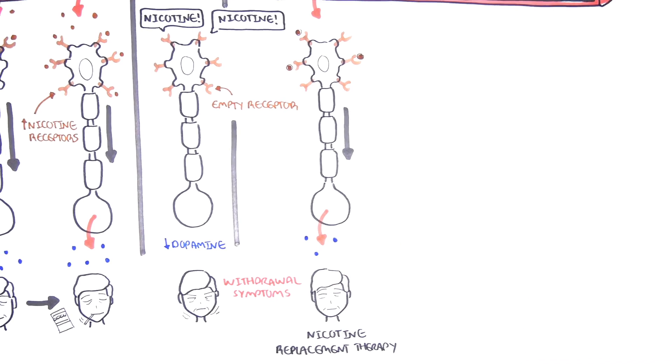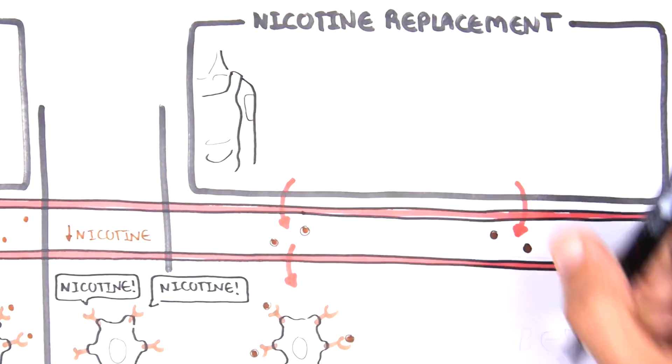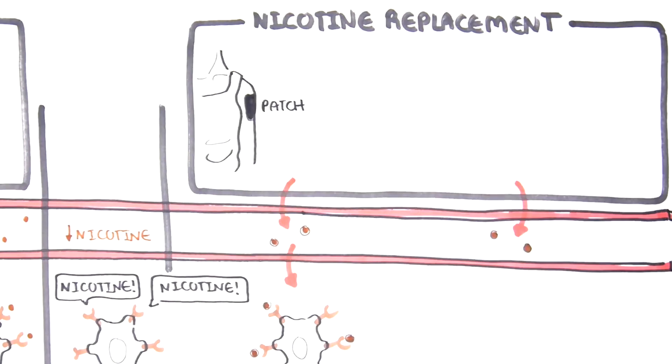NRT comes in two forms, long-acting and short-acting. NRT patches are long-acting. They keep a steady low level of nicotine receptors filled for a long period of time to help make withdrawal symptoms like feeling cranky or restless more manageable.